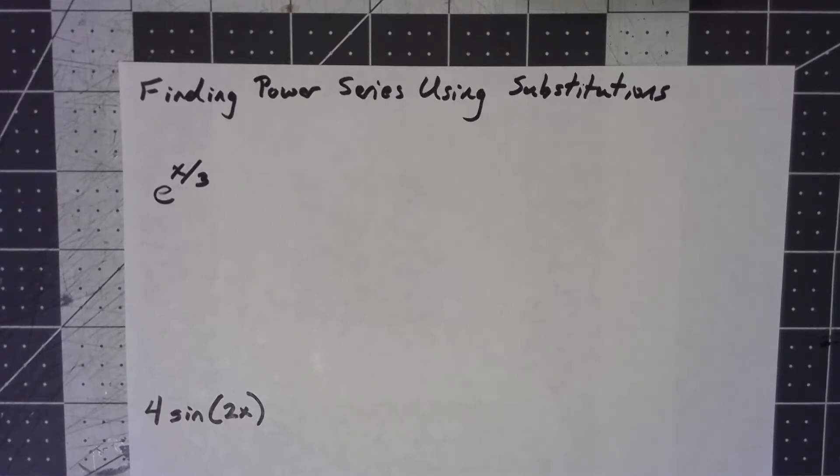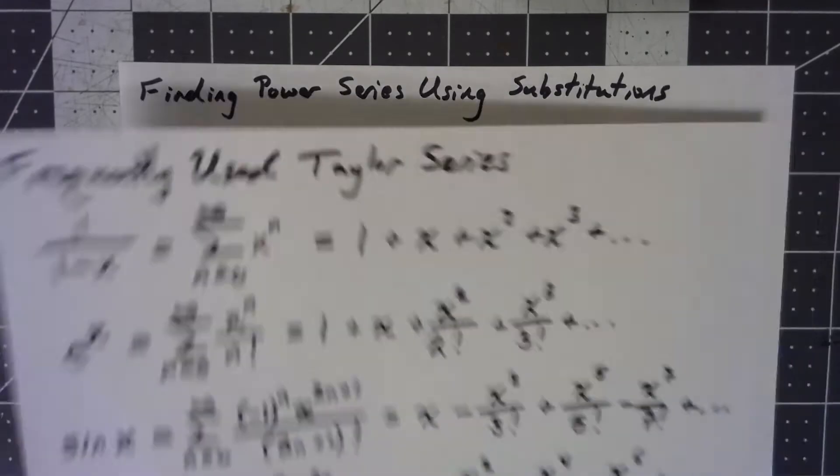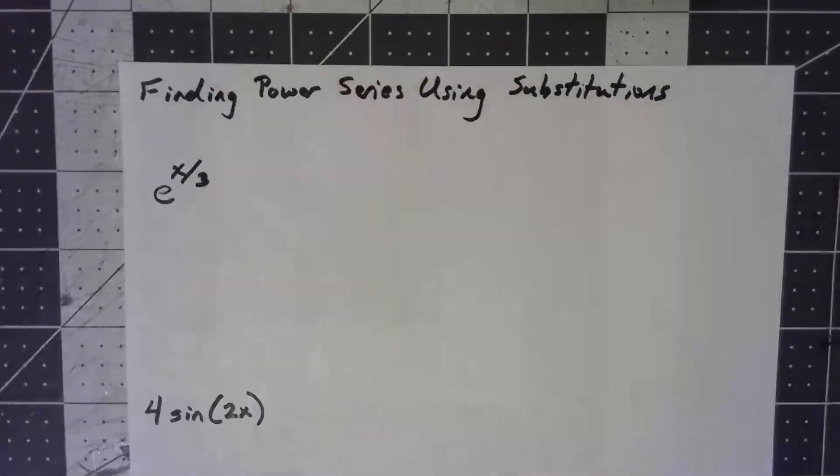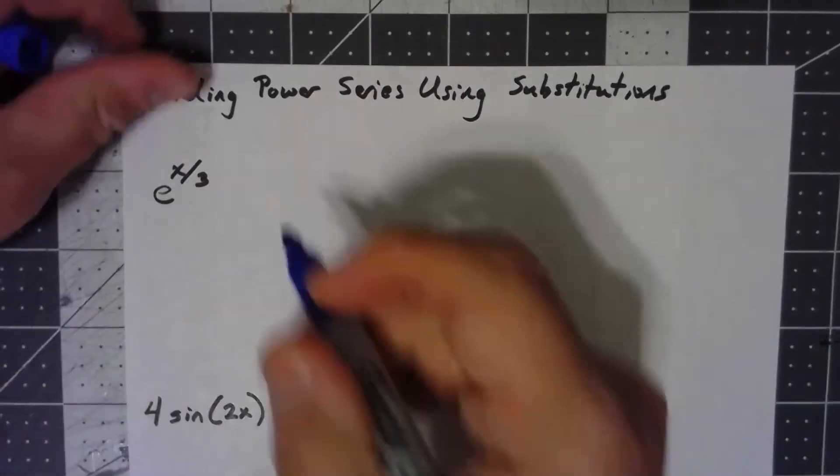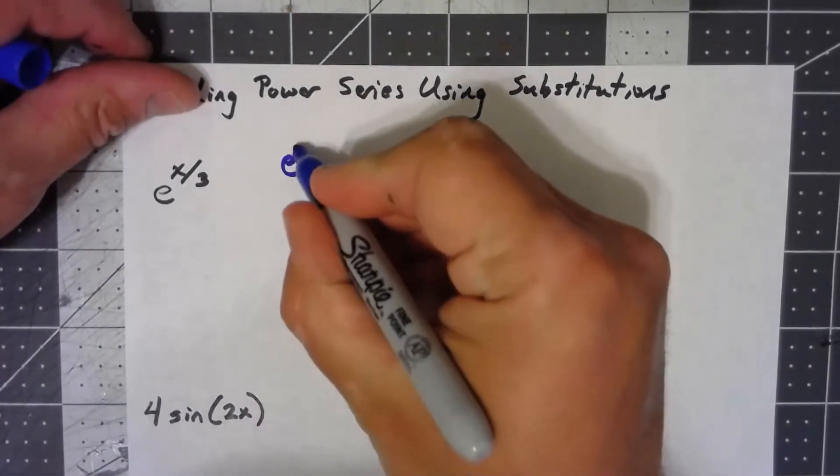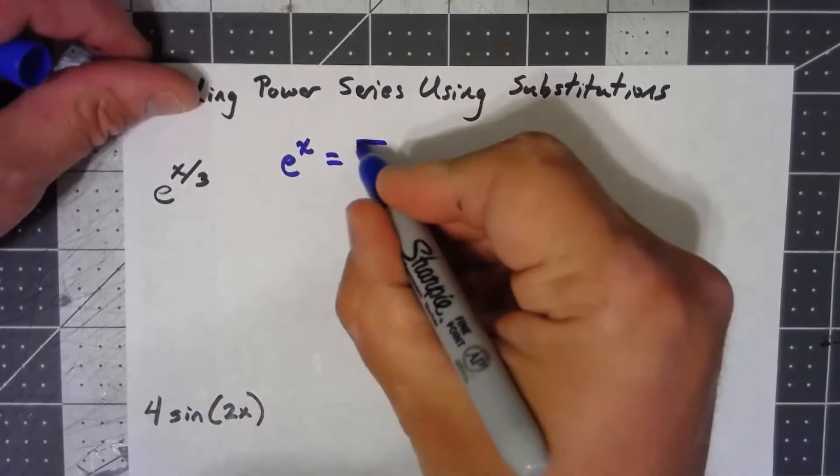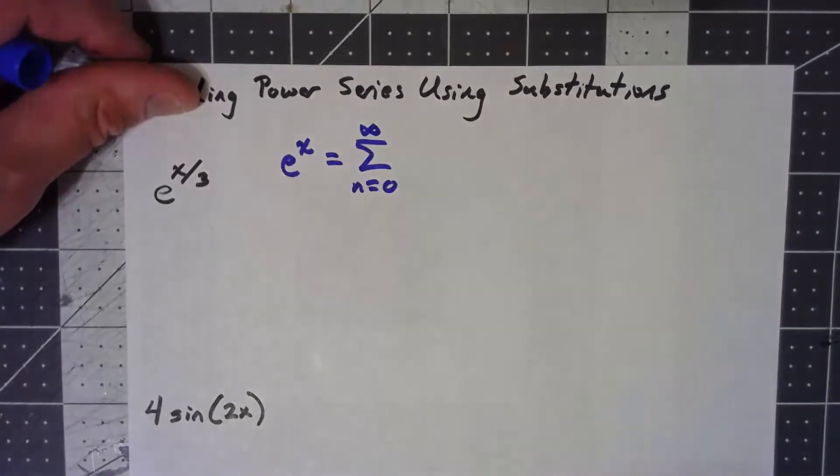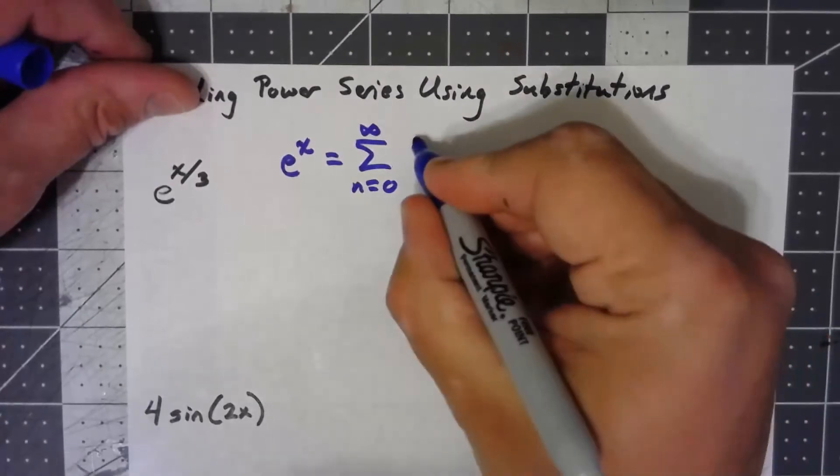So here, e to the x over 3, that's not one of our standard power series, but e to the x is. e to the x is equal to the sum from n equals 0 to infinity of x to the n over n factorial.